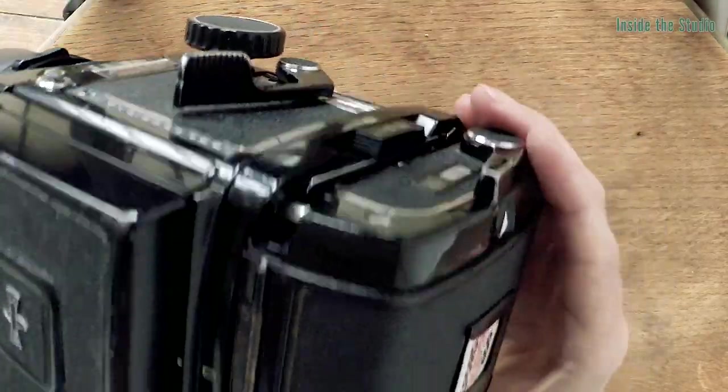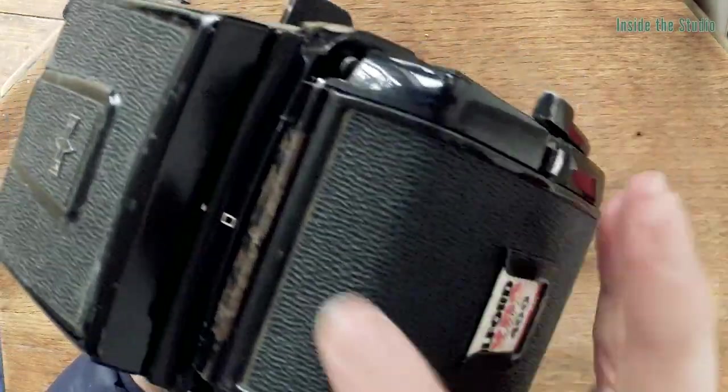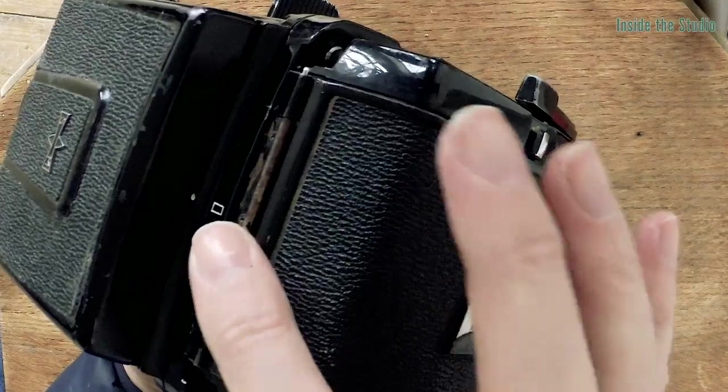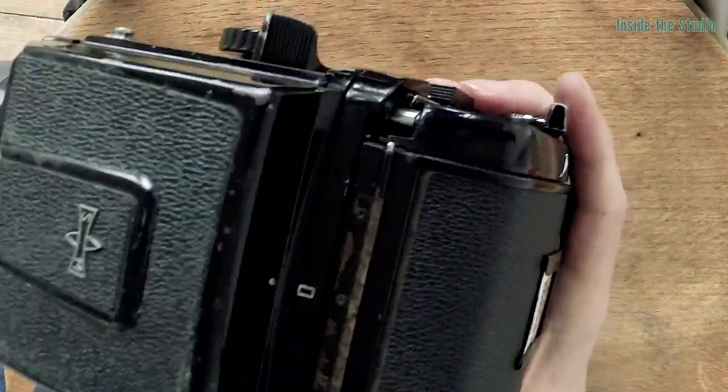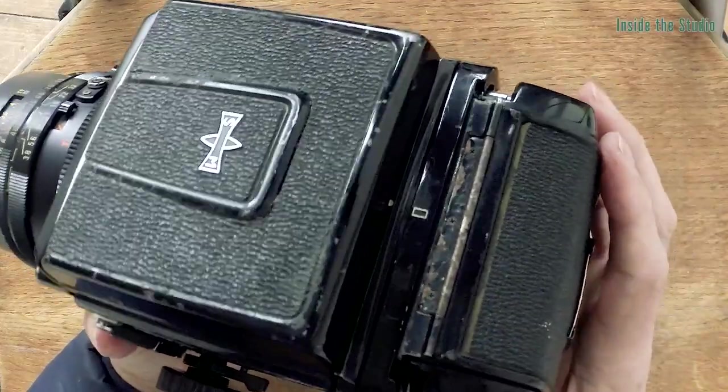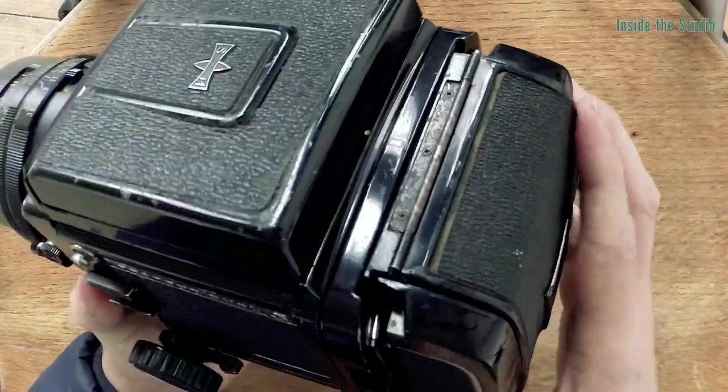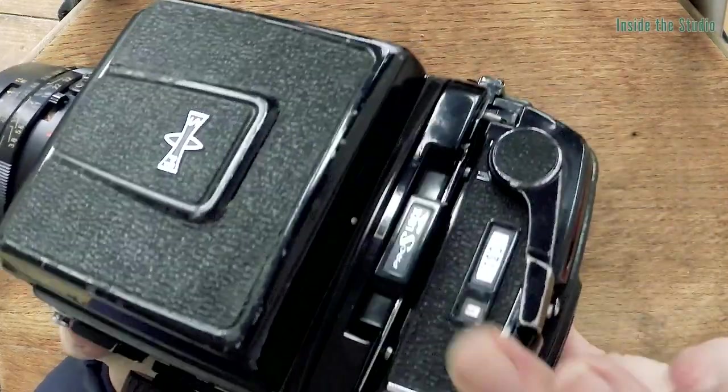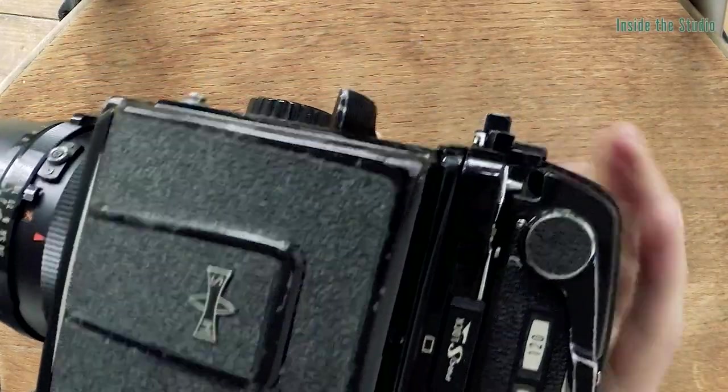Another thing which is kind of cool about this camera, you'll see here it's in portrait mode. So if you want to take a different style of picture, a landscape or a portrait, then what you do is no problem, I will just twist the film canister around and I'm now in landscape mode.